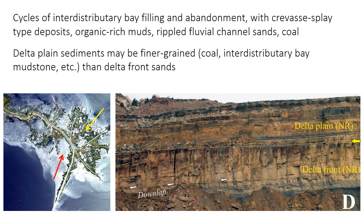Deltas are typically almost exclusively coarsening upward successions, but that really only applies to the delta front. Be cautious, because once you get into the delta plain, it may actually be significantly finer grained than the delta front, even though the delta plain is shallower and more proximal to the sediment source. The delta plain may have interdistributary bays with lots of mud, or coal swamps with fine-grained coal. So there can be fairly abrupt surfaces — marked in the right-hand picture — denoted by the shift from sand-rich delta front clinoforms below to mud or coal-rich interdistributary bay or swamp sediments in the delta plain above.